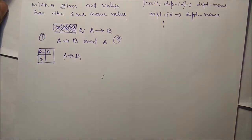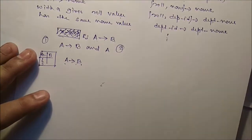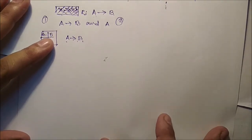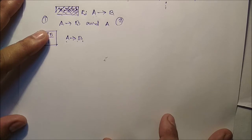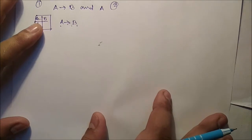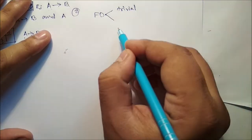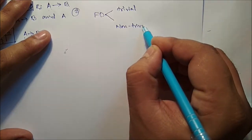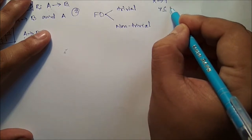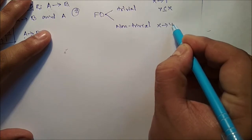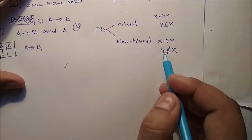We need to reduce the number of functional dependencies. To reduce the size of the set of FDs, we eliminate trivial dependencies. An FD is trivial if and only if the right-hand side is a subset of the left-hand side. Functional dependencies are of two types: trivial and non-trivial. Trivial means X→Y where Y is a subset of X. Non-trivial means X→Y where Y is not a subset of X.